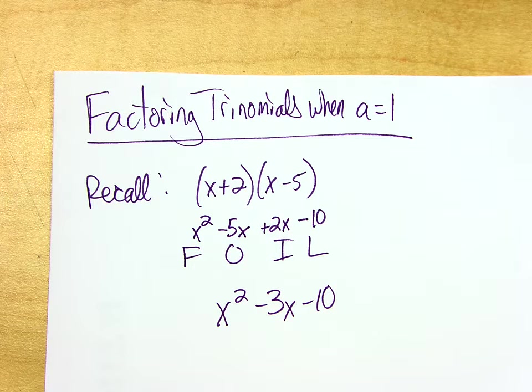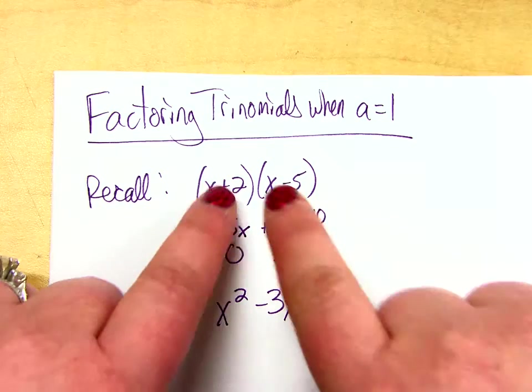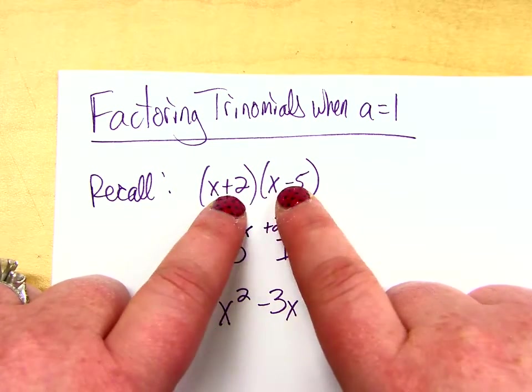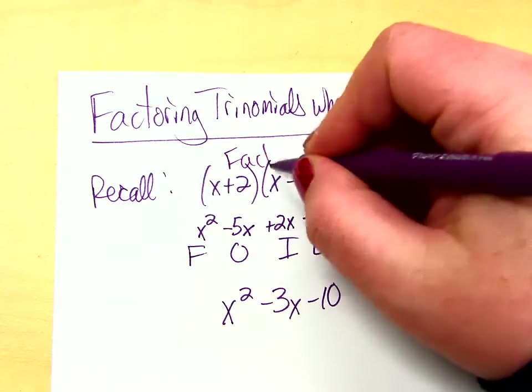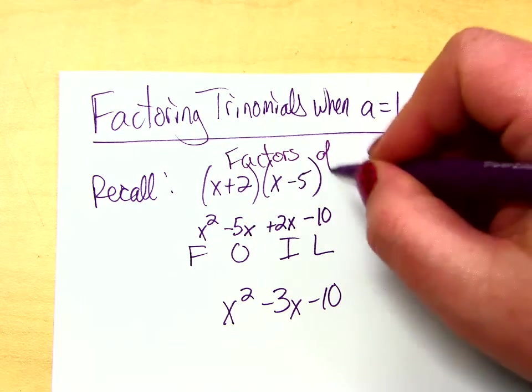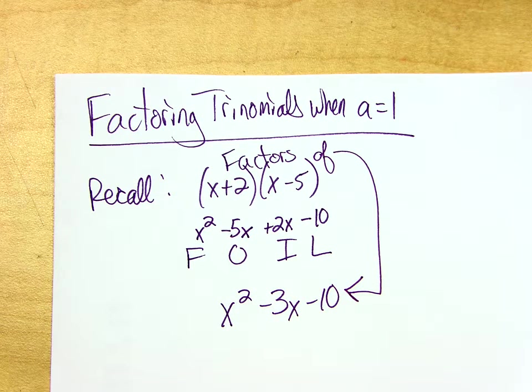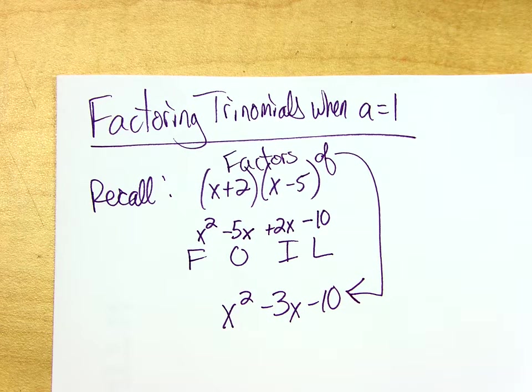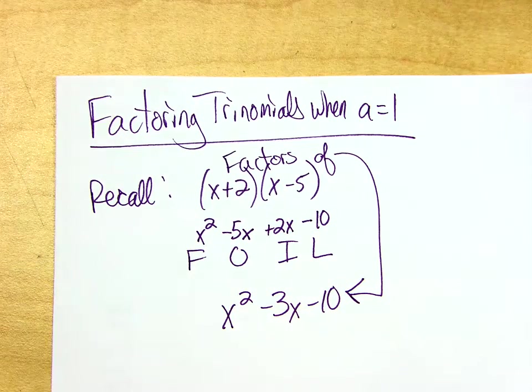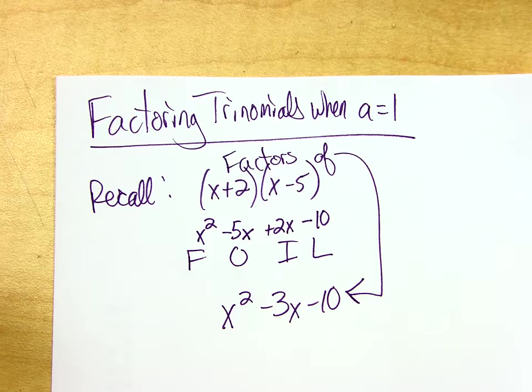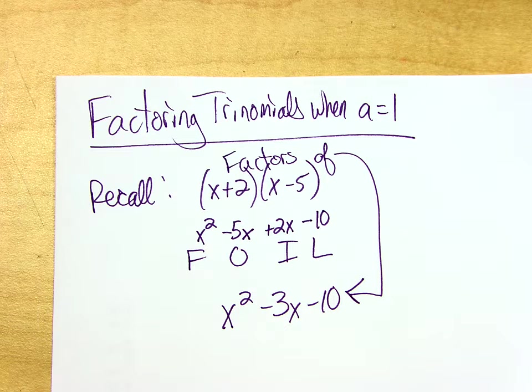2 times 5 gets me back to 10, right? So that's why some of the factors of 10 are 2 and 5. Because if I multiply 2 times 5, I get 10. If I multiply these two things together, I get this. So these are called the factors of that. So we are going the other way. Instead of multiplying them together, we're going to break them apart.